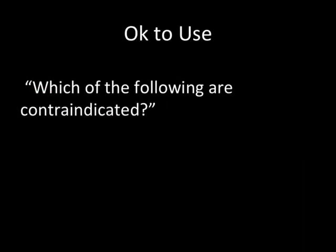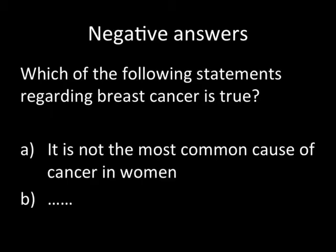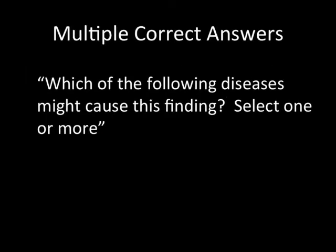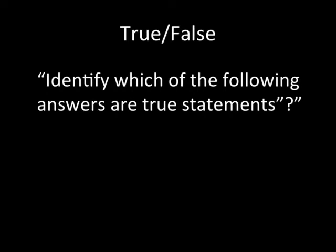You can, however, use 'which of the following are contraindicated' — that is considered acceptable. Similarly, avoid negative terms within the answer options themselves. For example, an answer stating 'it is not the most common cause of cancer in women' will be misread as 'it is the most common cause of cancer in women.' You should not use questions with multiple correct answers, which are essentially multiple true-false questions. Similarly, true-false questions such as 'identify which of the following answers are true statements' are no longer used in national exams and shouldn't be used in our own test writing.